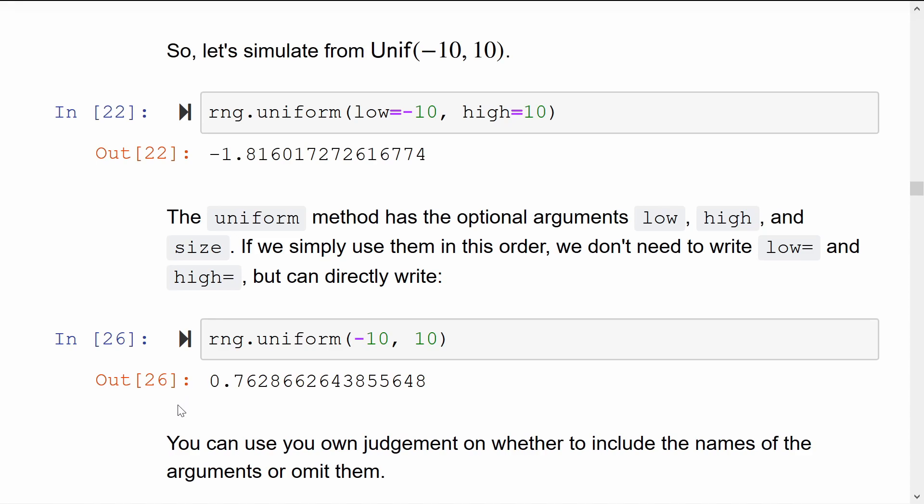And that's because Python, if you don't tell it, will automatically assume that the first thing you give it is the low parameter and the second thing you give it is the high parameter.